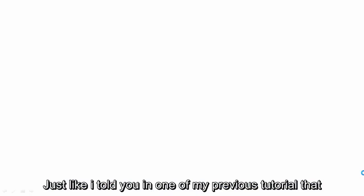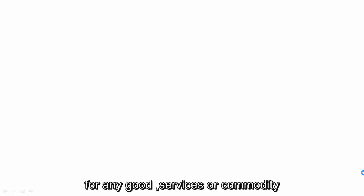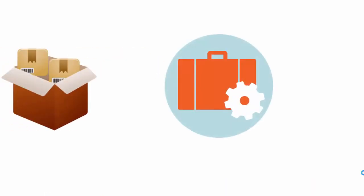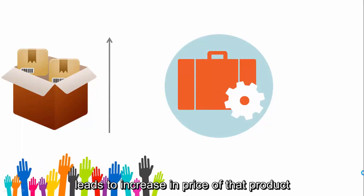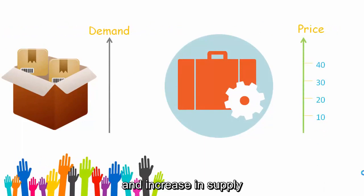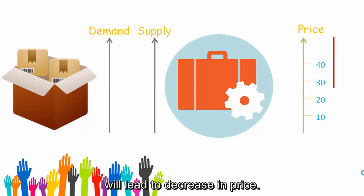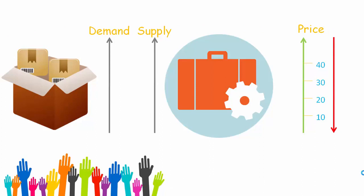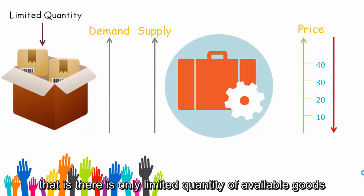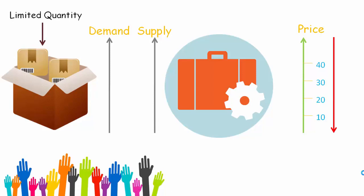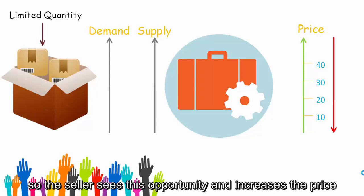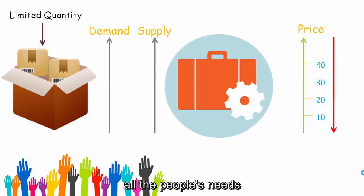Just like I told you in one of my previous tutorials, for any good, service, or commodity, an increase in demand leads to an increase in price of that product, while an increase in supply leads to a decrease in price. The reason prices rise is because the available quantity of goods remains the same — there is only a limited quantity — but simultaneously lots of people are asking for it, so the seller sees the opportunity and increases the price because he can't fulfill everyone's needs.